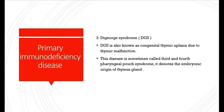Third, DiGeorge syndrome. DGS is also known as Congenital Thymic Aplasia due to thymic malfunction. This disease is sometimes called 3rd and 4th pharyngeal pouch syndrome. It denotes the embryonic origin of the thymus gland.